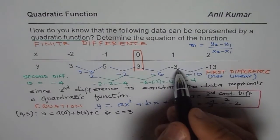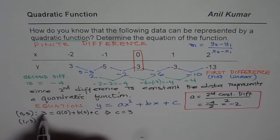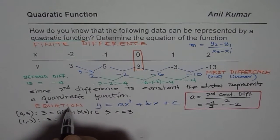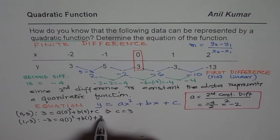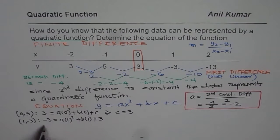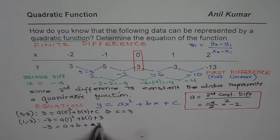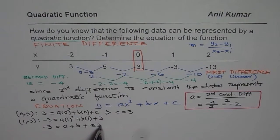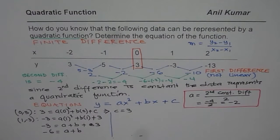Now we will use two more equations. Using the point (1, minus 3): y is minus 3 and x is 1, so we get minus 3 equals a times 1 squared plus b times 1 plus 3. Simplifying: a plus b plus 3 equals minus 3, so a plus b equals minus 6. That is equation 2, utilizing the point (1, minus 3).